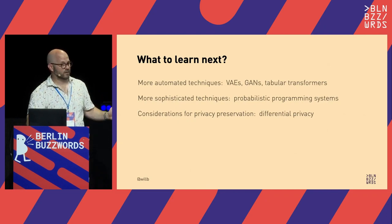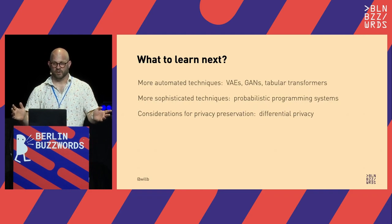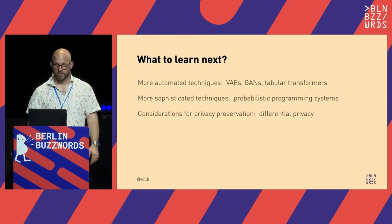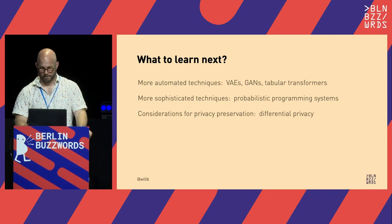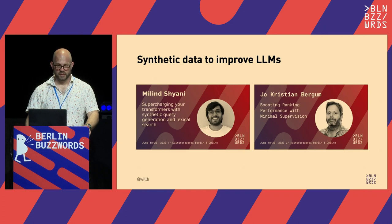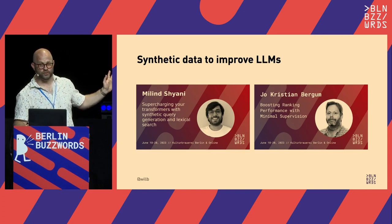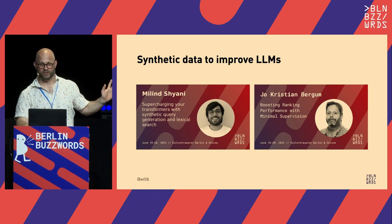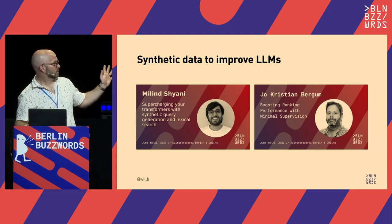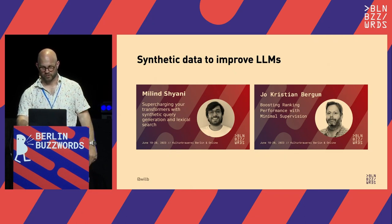If you're interested in synthetic data for privacy, look at differential privacy — simply having marginal distributions isn't always enough to prevent someone from identifying a natural person in your system. We also had talks at this conference on using synthetic data to improve specialized LLMs in the context of search systems, including excellent talks by Melinda and Jo Christian on using synthetic language data to improve language and search systems.